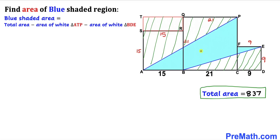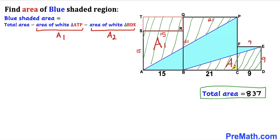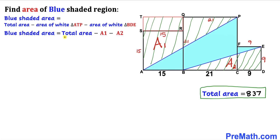Now let's focus on the blue area. It equals the total area we already calculated, minus the area of white triangle ATP — which we'll call A sub 1 — minus the area of white triangle BDE — which we'll call A sub 2. So: blue shaded area = total area − A₁ − A₂.